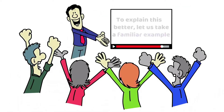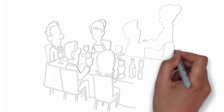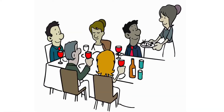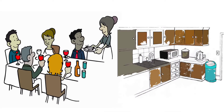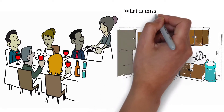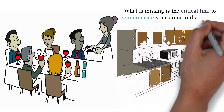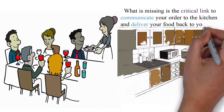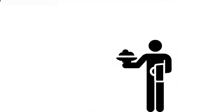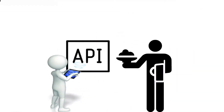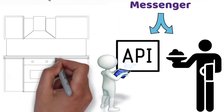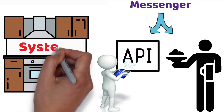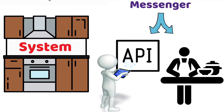To explain this better, let us take a familiar example. Imagine you are sitting at a table in a restaurant with a menu of choices to order from. The kitchen is the part of the system that will prepare your order. What is missing is the critical link to communicate your order to the kitchen and deliver your food back to your table. That's where the waiter, or API, comes in. The waiter is the messenger or API that takes your request or order and tells the kitchen — the system — what to do. Then the waiter delivers the response back to you, in this case, the food.